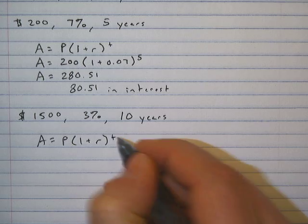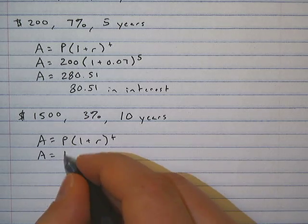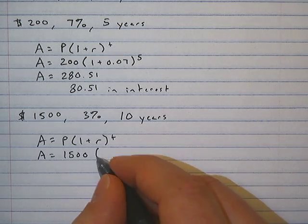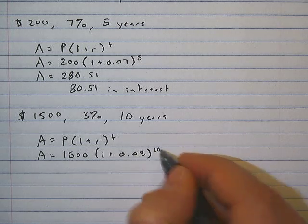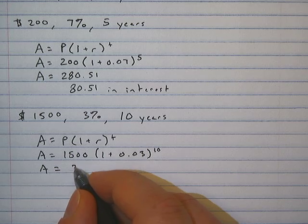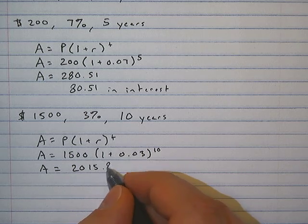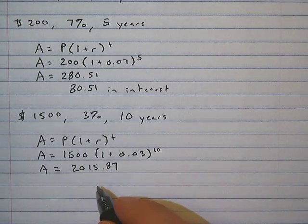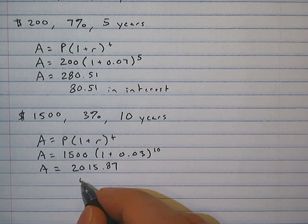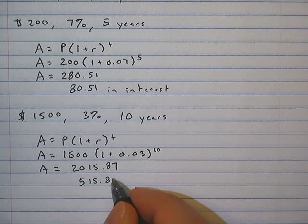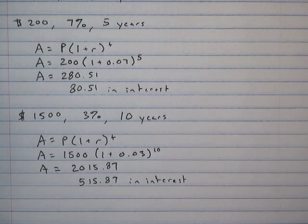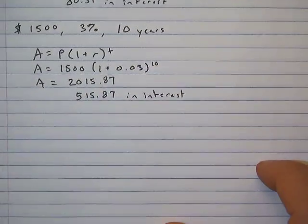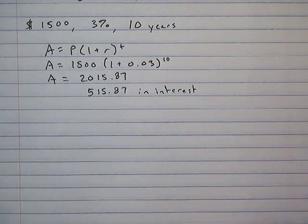Write the formula: A equals P times (1 plus r) to the t power. A equals 1500 times (1 plus 0.03) to the 10th power. A equals $2,015.87, which means we made $515.87 in interest. Not bad for doing nothing, right? Let's do one final example.